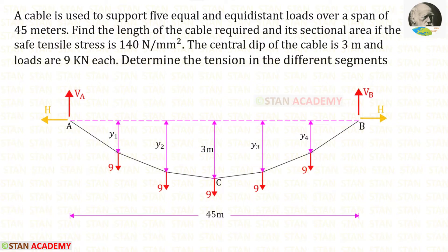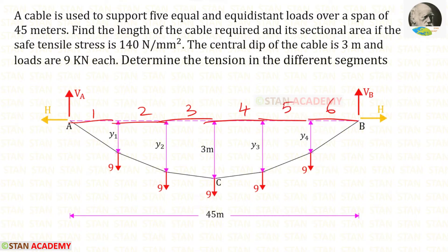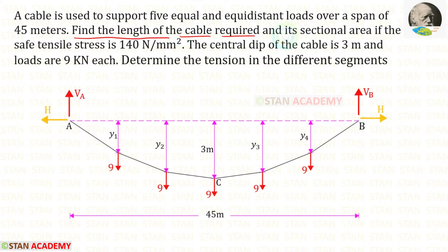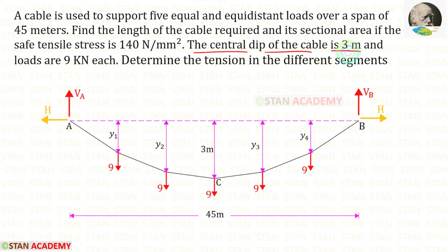Let us count the portions: 1, 2, 3, 4, 5, and 6. The total span is 45, so 45 divided by 6 gives 7.5 meters. The length of each portion is 7.5 meters. Find the length of the cable required and its sectional area, if the safe tensile stress is 140 Newton per millimeter square. The central dip of the cable is 3 meters and the loads are 9 kilo Newton each. Determine the tension in the different segments.